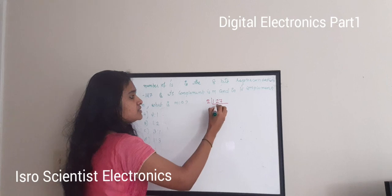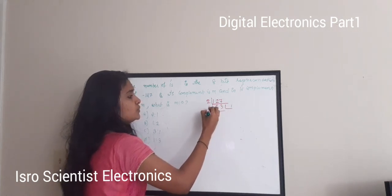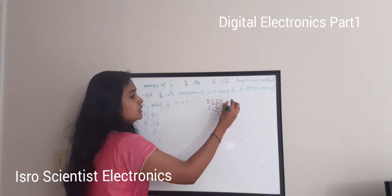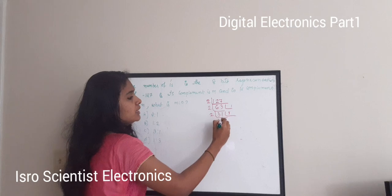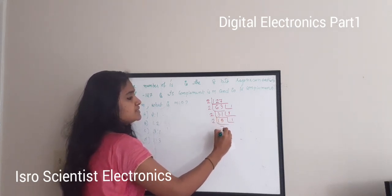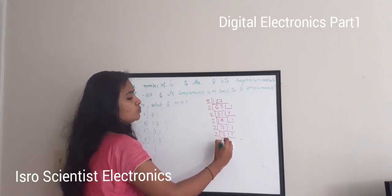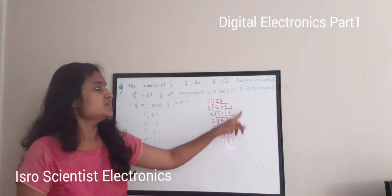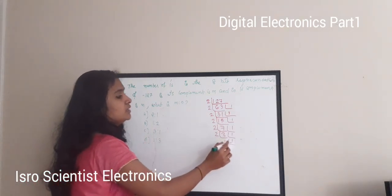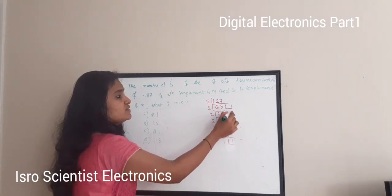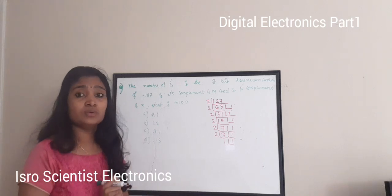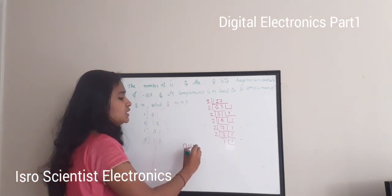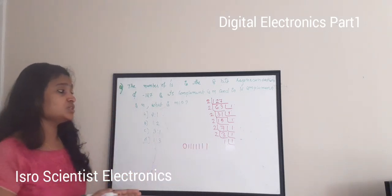Dividing 127 by 2 repeatedly: 127 ÷ 2 = 63 R1; 63 ÷ 2 = 31 R1; 31 ÷ 2 = 15 R1; 15 ÷ 2 = 7 R1; 7 ÷ 2 = 3 R1; 3 ÷ 2 = 1 R1; 1 ÷ 2 = 0 R1. So 127 in binary is all 1s — seven 1s. For an 8-bit representation, add a leading 0: so +127 = 0111 1111.